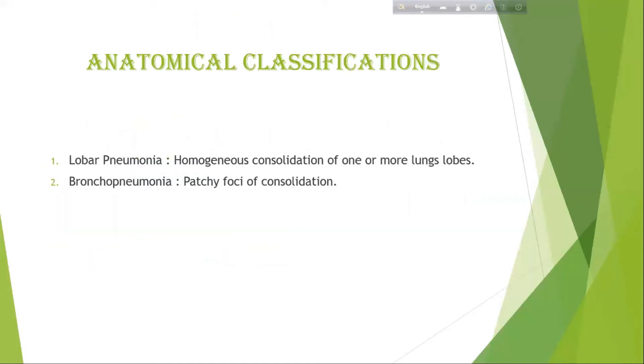Anatomical types of pneumonia. Lobar pneumonia: Homogeneous consolidation of one or more lung lobes. Bronchopneumonia: Patchy foci of consolidation.